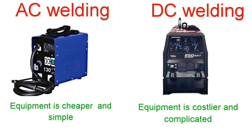Equipment: In the case of AC welding, equipment is cheaper and simple, whereas in the case of DC welding, equipment is costlier and complicated.